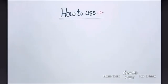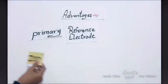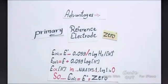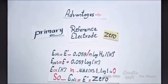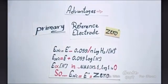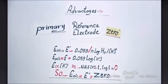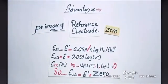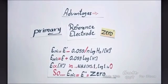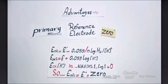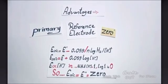Now we will talk about its advantages. It is a primary reference electrode, as its potential is zero, from the Nernst equation, which states: E = E0 minus (0.059 / n) times log of [H₂] divided by [H⁺]², which equals E0 plus 0.059 times log of the concentration of hydrogen ions. So E is directly proportional to the concentration of hydrogen ions, and since log 1 equals zero, E0 equals zero.